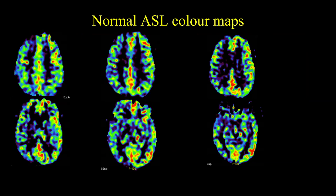This is how a normal ASL color map looks like. Usually in standard techniques, we use a rainbow color spectrum format. Whatever is towards the red part of the spectrum is relatively hyperperfused, while whatever is towards the blue part of the spectrum is relatively hypoperfused.